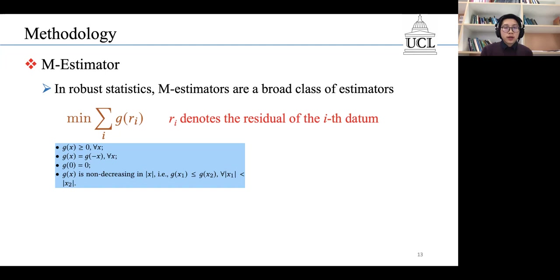The function g should satisfy the following four properties. Then, the objective is to minimize the sum of all the g values.